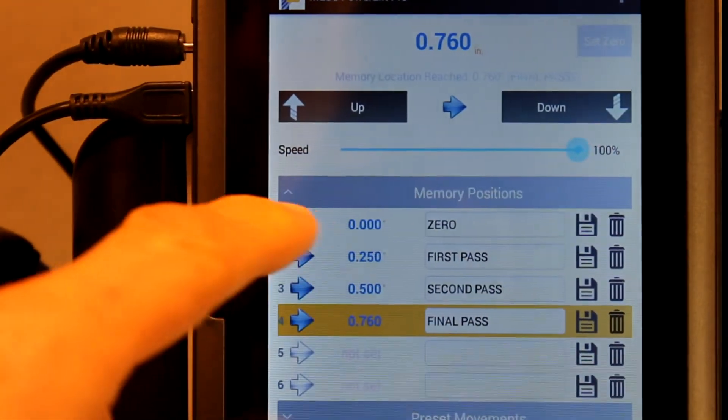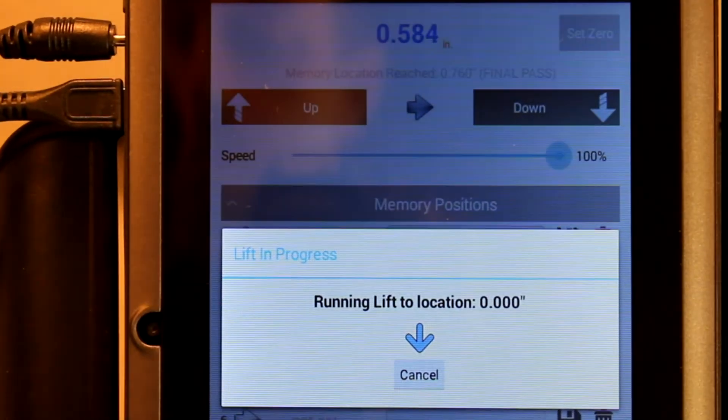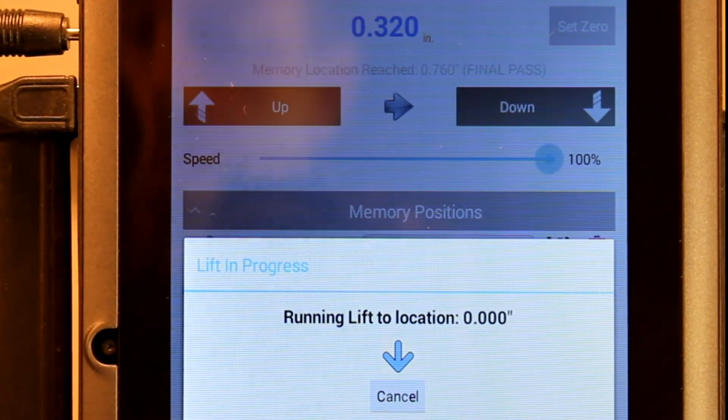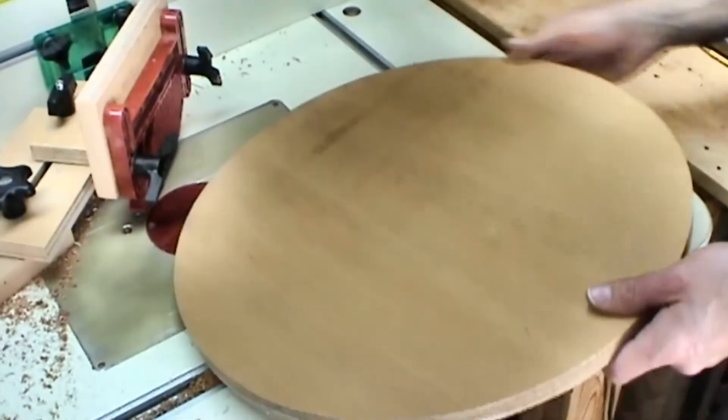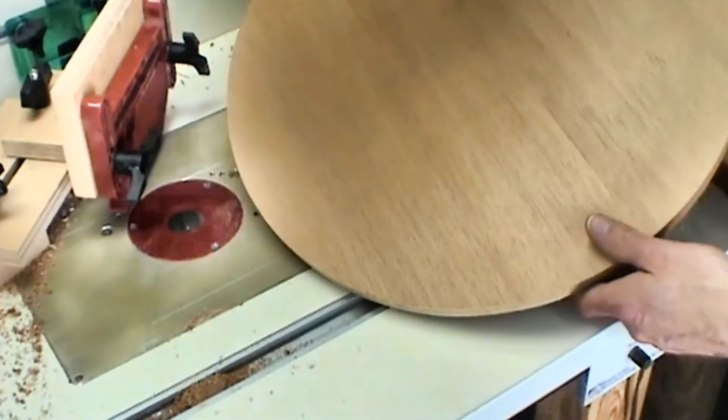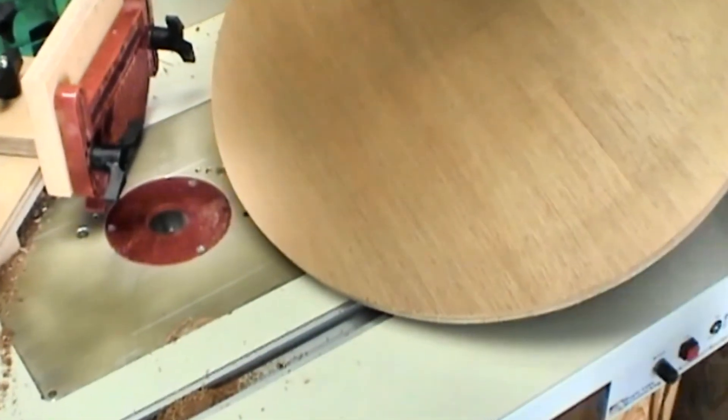When the cut is complete, I raise the speed on the lift and tell it to move to the zero location in memory position one. This takes the bit quickly beneath the table so that I can safely remove the workpiece. Perfect circle every time.